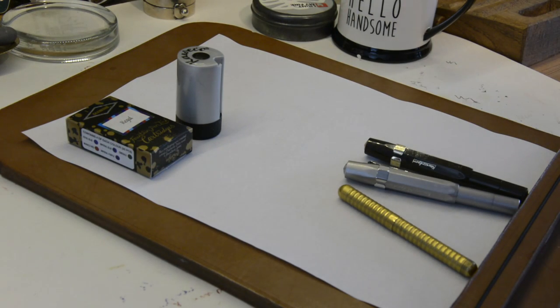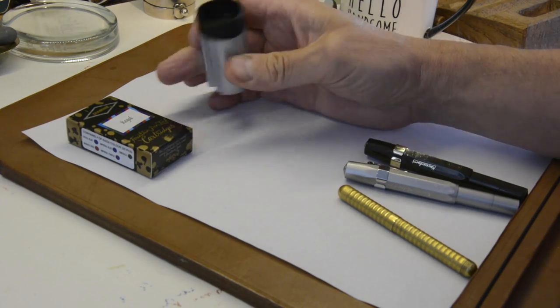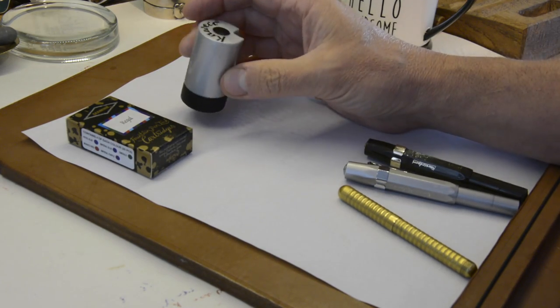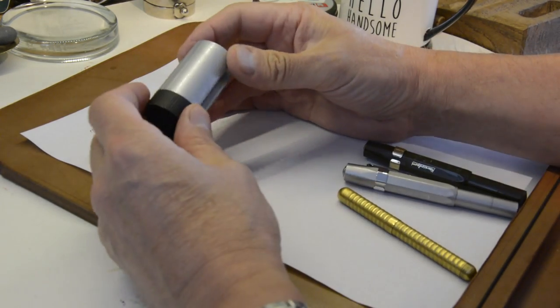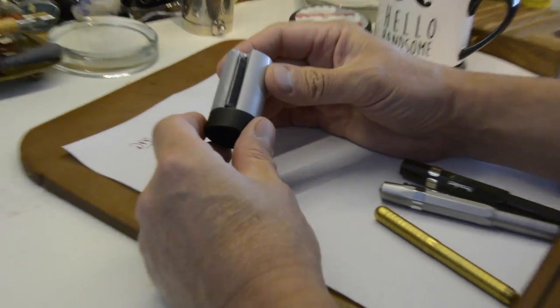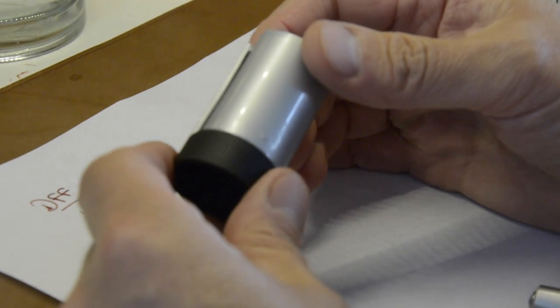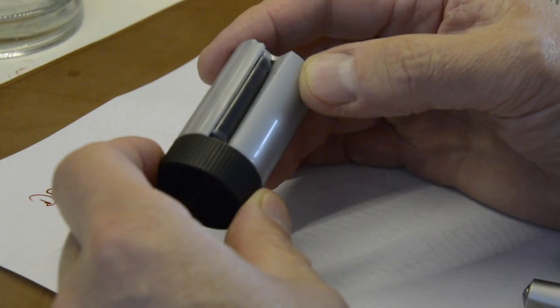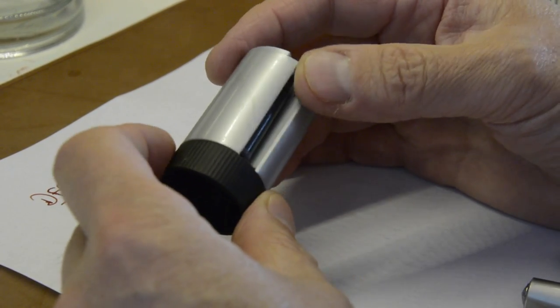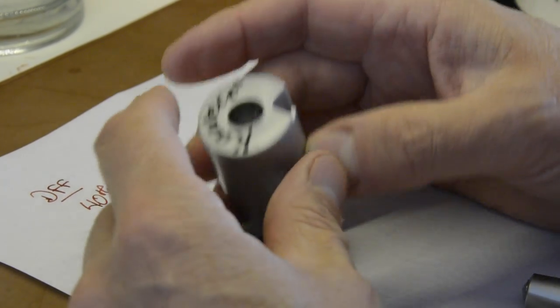OK, so the first thing I want to talk about today is my Caveco ink cartridge holder, because it's fantastic. For those of you in America who have ever shot a Ruger 10-22, this is pretty much the same as the magazine for that rifle. It is just a simple little design.